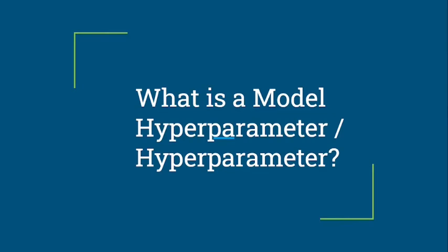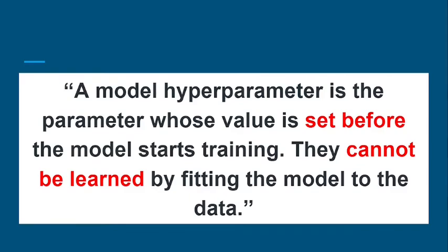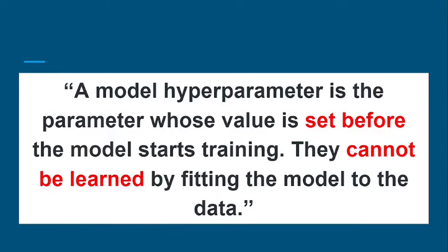Now let's look at what a model hyperparameter is. A model hyperparameter is a parameter whose value is set before the model starts training. They cannot be learned by fitting the model to the data. The two important points are: hyperparameters are not learned by the model, and they are set before training begins.